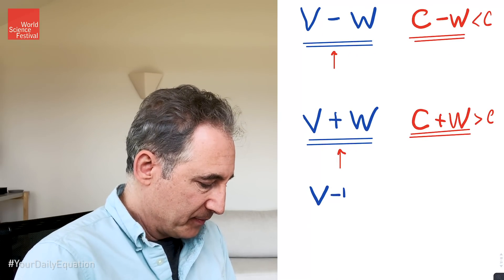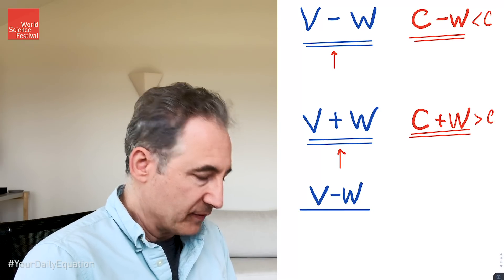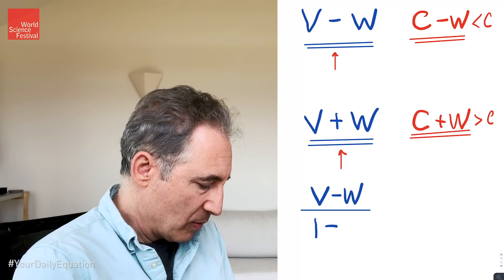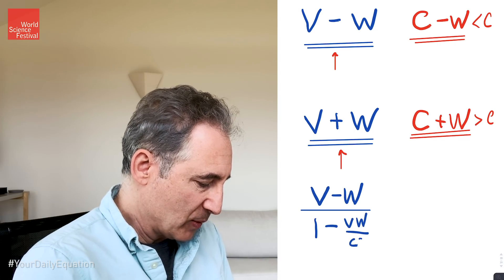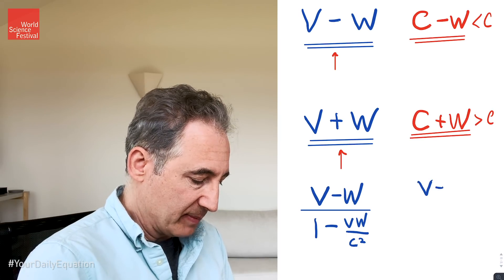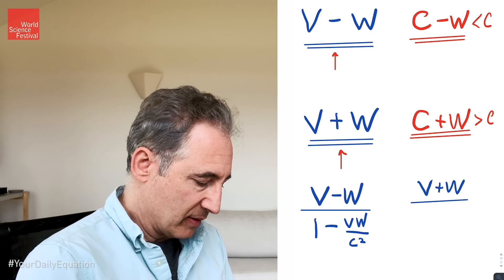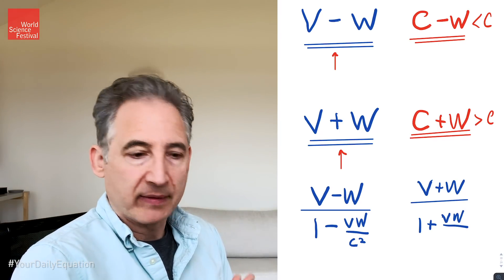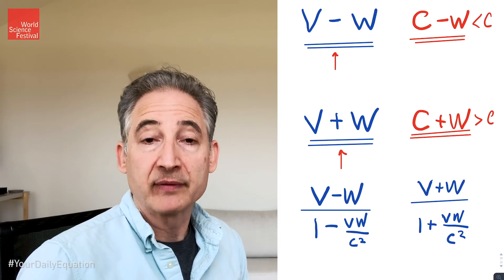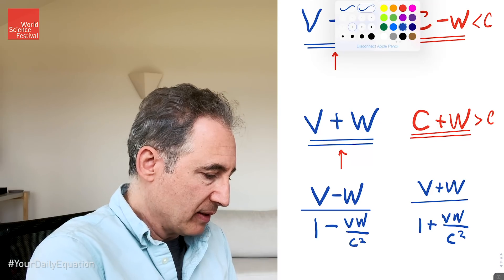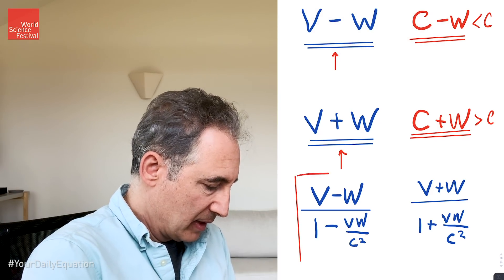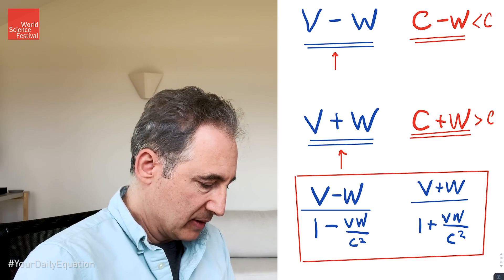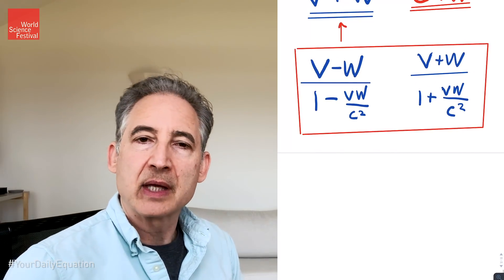But Einstein actually taught us that each of these formulas needs a correction. Let me show you what the correction is, as that is today's daily equation. So instead of v minus w, Einstein says that the correct formula of the speed of approach if you're running away from an object that has speed v and you're running away at speed w is corrected by 1 minus vw divided by c squared. And the v plus w formula gets a very similar correction, and that correction just has the other sign.